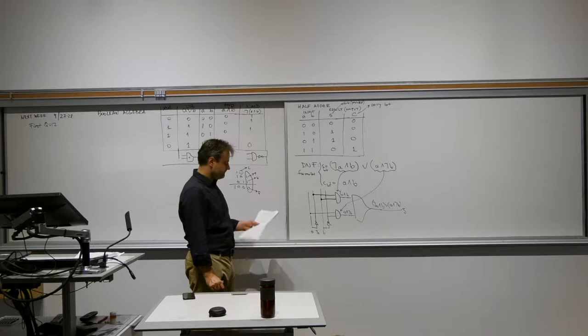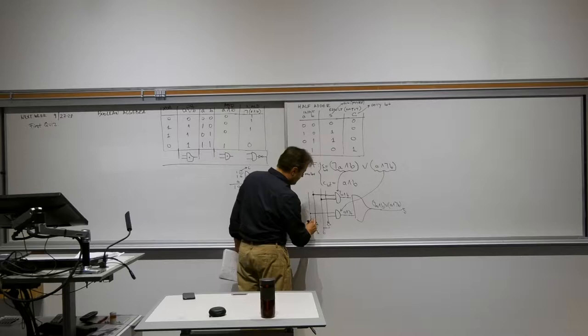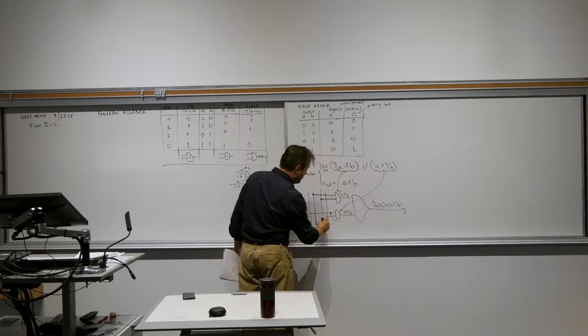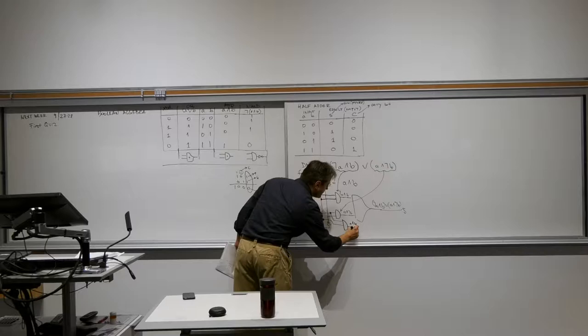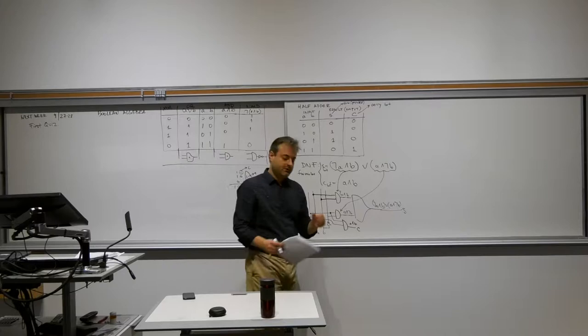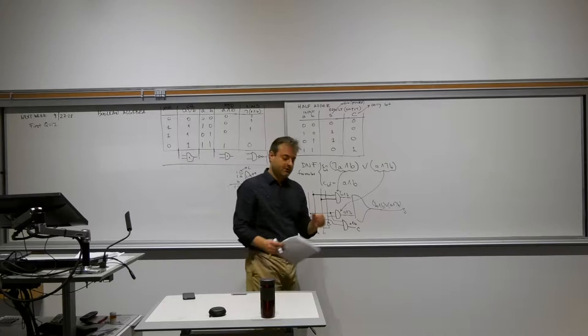For the other output, the C bit, I take a wire from A and a wire from B and create an AND gate. That's A AND B, which I call C. So this is a circuit that does this formula, equivalent to the truth table. The only problem is it only works for the first column when there is no input carry.